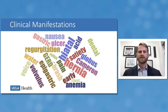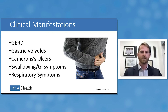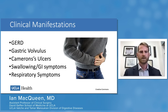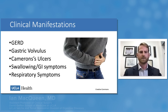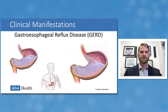The clinical manifestations of hiatal hernias are many and can seem confusing. I've grouped them into five main categories: gastroesophageal reflux disease, gastric volvulus, Cameron's ulcers, swallowing and GI symptoms, and respiratory symptoms. The first category is gastroesophageal reflux disease — the pathologic reflux of fluid and acid from the stomach back up the esophagus through the gastroesophageal junction.